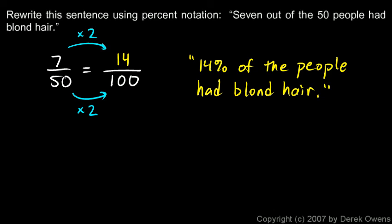14% of the people had blond hair. So instead of writing '7 out of the 50 people,' we wrote '14% of the people.' That's the percentage notation instead of the fraction.